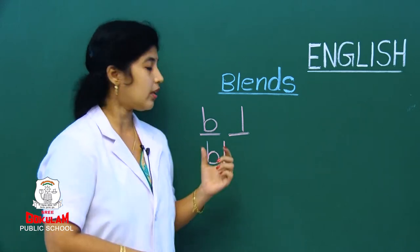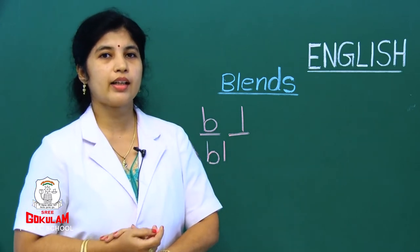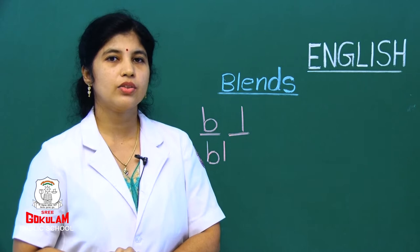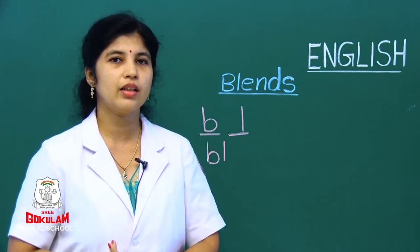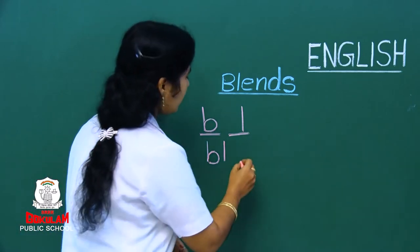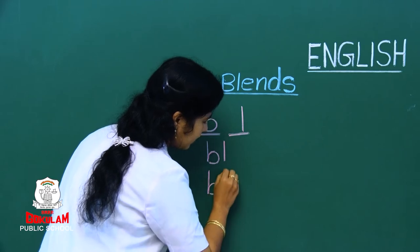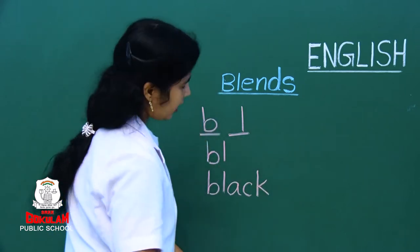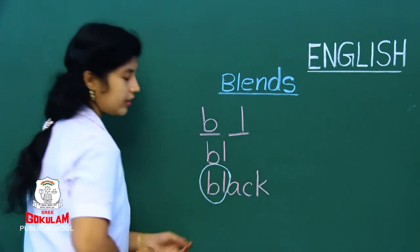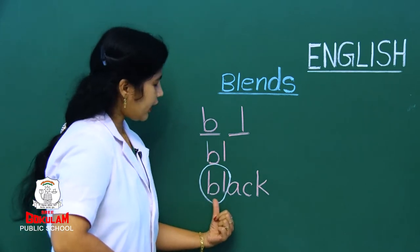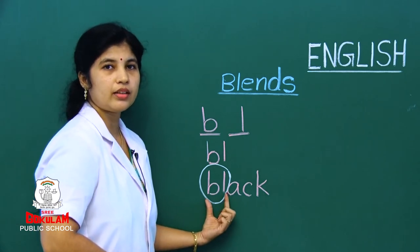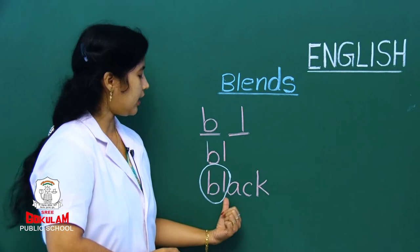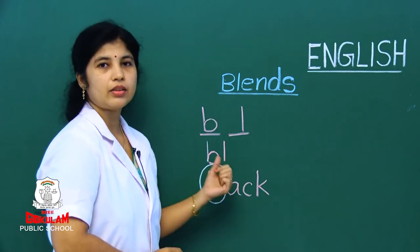Do you know any words beginning with BL? What is the color of the hair, children? It is black. So what is the first sound coming? BL. B and L together — black. Here two consonants combine together and we are able to hear the sound of both letters. BL — black.